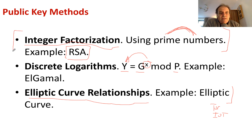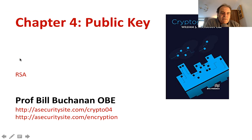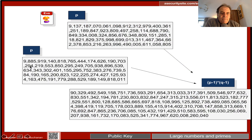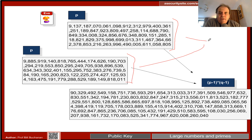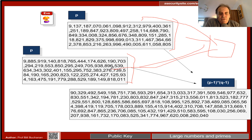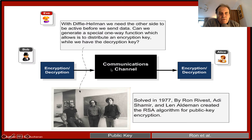With RSA, the difficulty is that we take two large prime values, multiply them together, and once we have that product, it's quite difficult to reverse it back to find the original values. The method itself was created by Rivest, Shamir, and Adleman, who created the RSA algorithm for public key encryption.